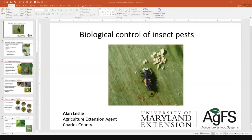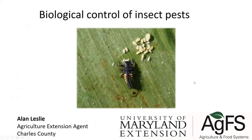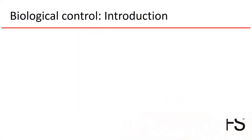I'd like to now turn the presentation over to Alan Leslie to talk about principles of biological control. Today it's going to be a broad overview of the basics of biological control, mainly of insect pests. There are biological control agents for all kinds of agricultural pests, but my background is in entomology, so that's my preference to focus on insects. Some of the most successful biological control programs are with insect and other arthropod pests.